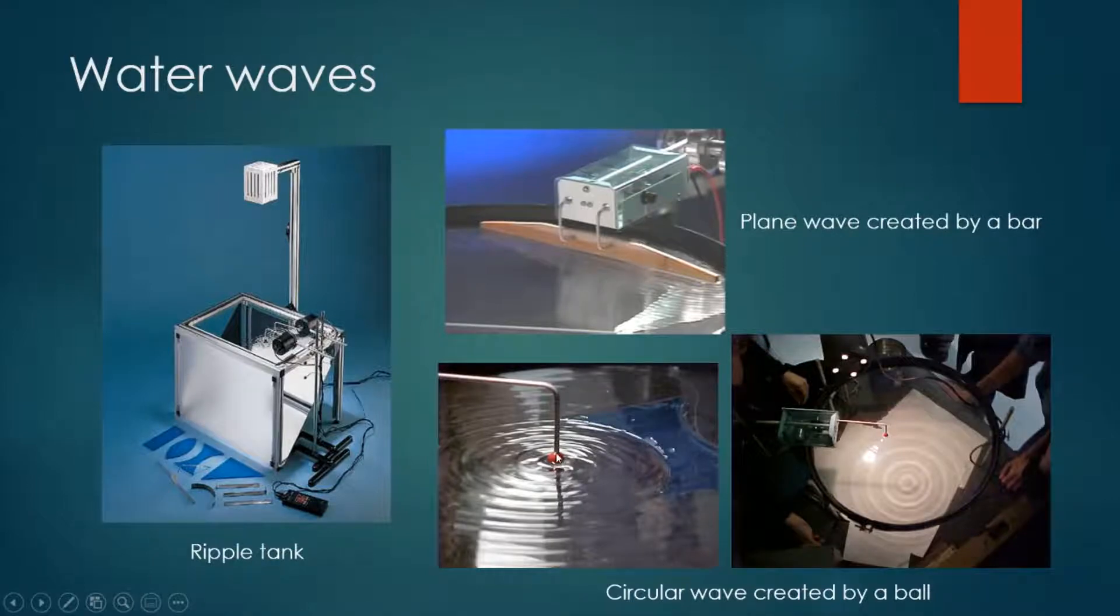If the vibrating object is a ball, then circular wave will be produced. On the piece of paper, we will see the water wave pattern. As you can see here, it is bright and dark circles of the circular wave.